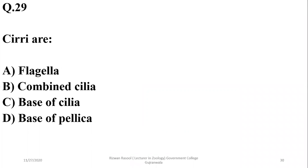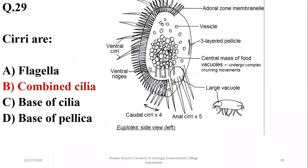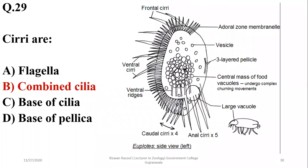Question twenty-nine: cirri are the combined or fused cilia found in phylum Ciliophora. The correct option is B.